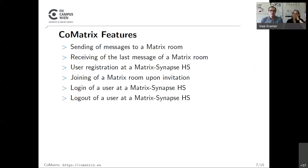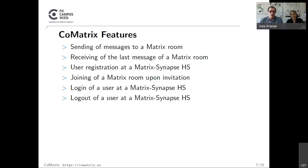The Matrix protocol provides many features, but not all are interesting for IoT use cases. We selected a few relevant features: sending messages to a Matrix room, receiving the last message of a Matrix room, registering a new user at the Matrix home server, joining a Matrix room after being invited, and logging a user in or out at a home server.